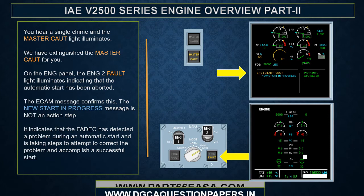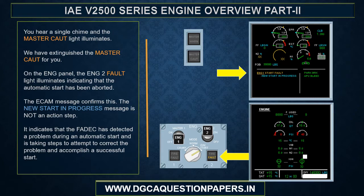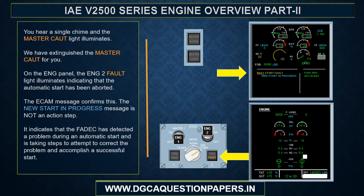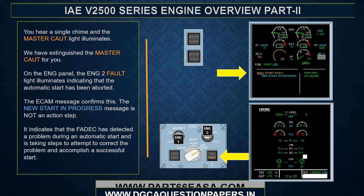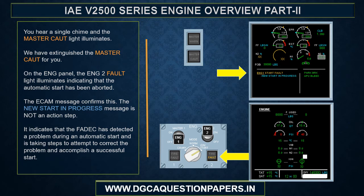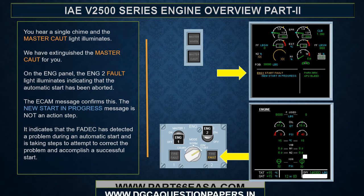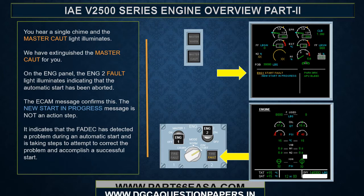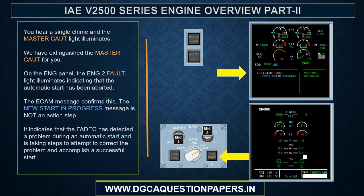A single chime sounds and the master caution light illuminates. On the engine panel, the engine 2 fault light illuminates, indicating that the automatic start has been aborted. The ECAM message confirms this. The 'new start in progress' message is not an action step — it indicates that the FADEC has detected a problem during an automatic start and is taking steps to attempt to correct the problem and accomplish a successful start.